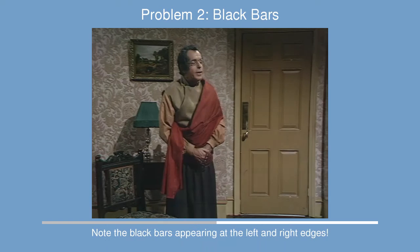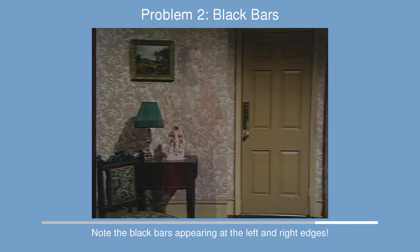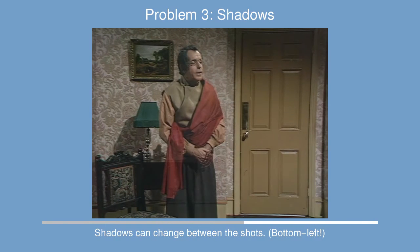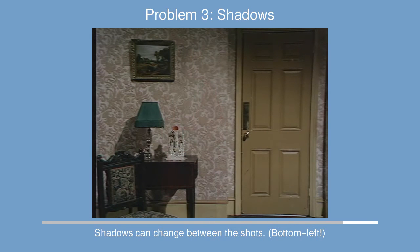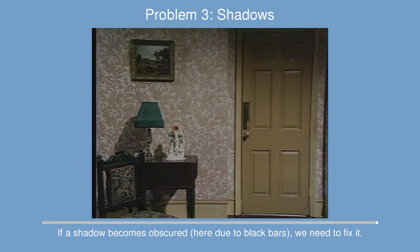Here we have Cho Ji vanishing while he's talking to Sarah Jane. There are a few defects including black bars appearing on the edges, misalignment between the shots and lighting changes.